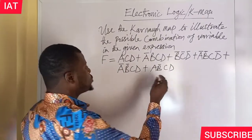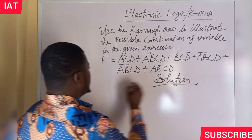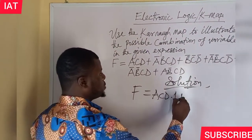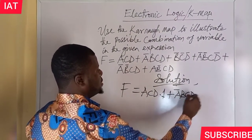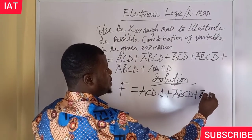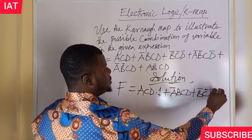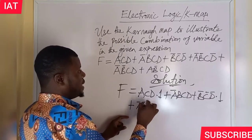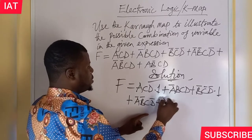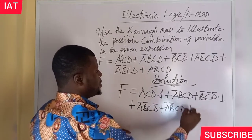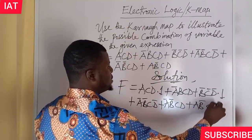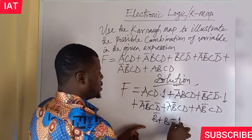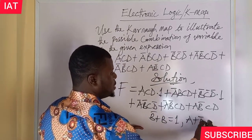So how do we achieve that? F now will be equal to: we have ACD dot 1, multiply by 1, plus A-bar B C D — this is complete — plus B-bar C-bar D-bar dot 1, plus A B C D, plus A-bar B-bar C D. You have to note that B-bar plus B equals 1, and similarly A plus A-bar equals 1.